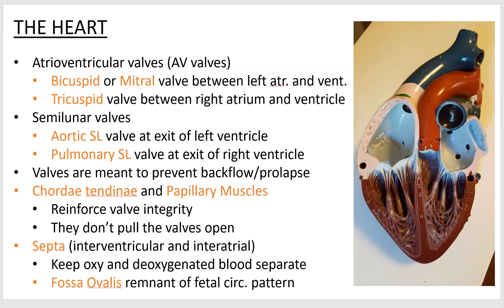Now let's look at more specific structures inside the heart. This is the right atrium, which has just received blood from the superior vena cava and the inferior vena cava below. The blood goes through the tricuspid valve — that's the right atrioventricular valve — between the right atrium and right ventricle. You can see these small line-like structures right here; those are called chordae tendinae.